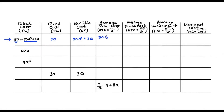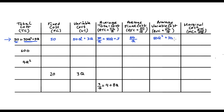Our average total cost is just total cost divided by Q. That's (50 + 50Q² + 3Q) all divided by Q, which simplifies to 50/Q + 50Q + 3. Our average fixed cost is fixed cost divided by Q, and we saw our fixed cost is 50, so we get 50/Q. Our average variable cost is our variable cost divided by Q, and since our variable cost is 50Q² + 3Q, we divide all that by Q, which simplifies to 50Q + 3.